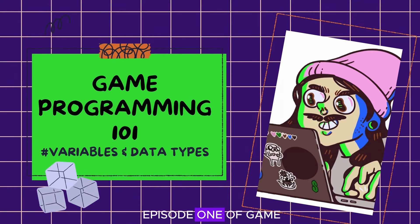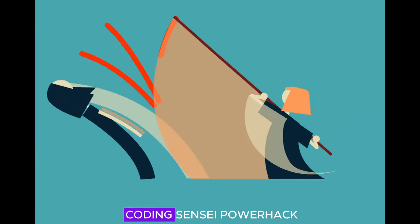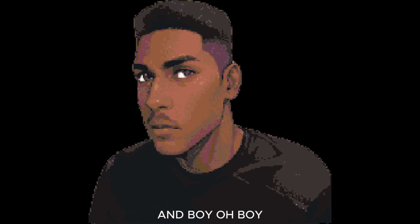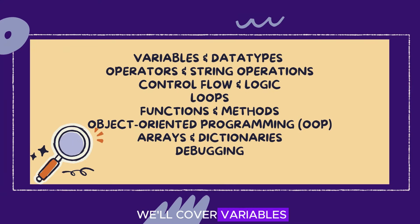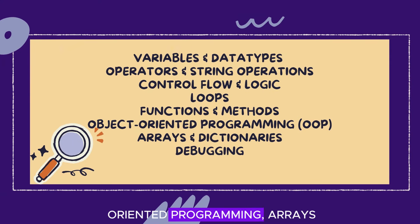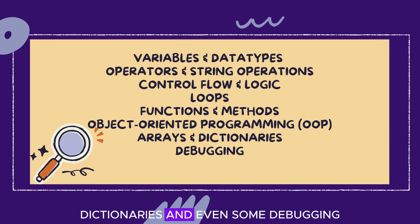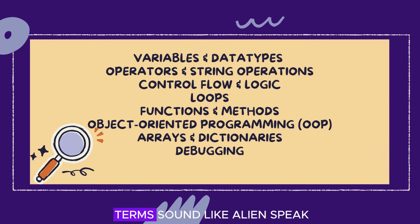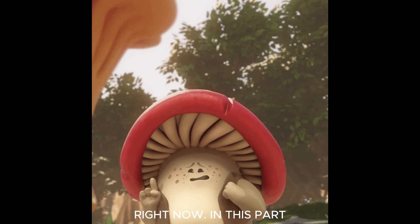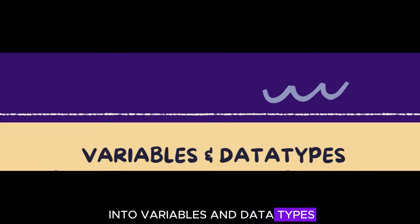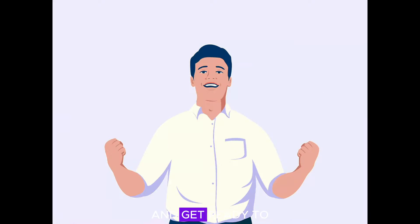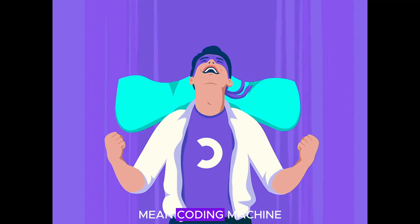Hello and welcome to episode 1 of Game Programming 101. I'm your guide, your coding sensei, Powerhug — and boy oh boy, do I have a video for you. In this crash course, we'll cover variables, loops, functions, a bit of object-oriented programming, arrays, dictionaries, and even some debugging. Don't worry if these terms sound like alien speak right now. In this part, we're going in-depth into variables and data types. So buckle up and get ready to transform your brain into a lean mean coding machine.